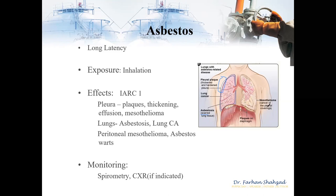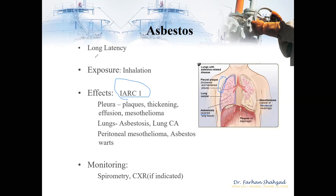Mesothelioma is the other variety we see — it is cancer of the pleural coverings. Asbestos is an IARC level one carcinogen with a long latency period of up to 40 years, which can be shortened by smoking. Spirometry — lung function testing — and chest x-rays, if indicated, are the usual pathways for monitoring. The mesothelioma register is a database containing information about people with mesothelioma in Australia. Mesothelioma can occur in the pleura around the lungs or even in the peritoneal area in the abdomen. All cases are recorded on the register.